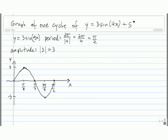Okay, now let's take care of this plus 5. The effect of the plus 5 on the outside means that we're going to take this graph of 3 sine of 4x and shift everything up 5 units.